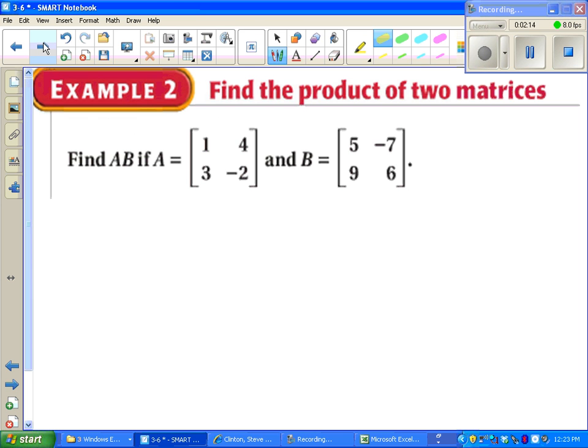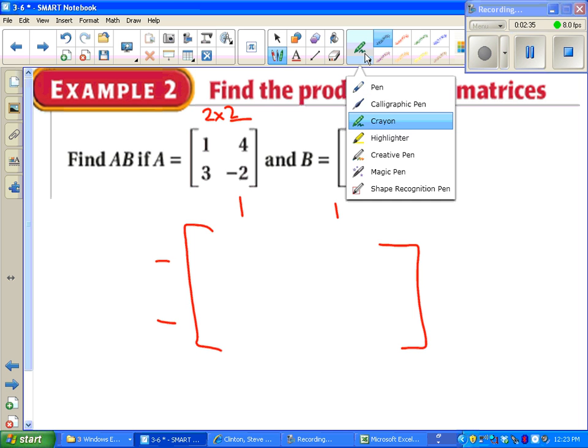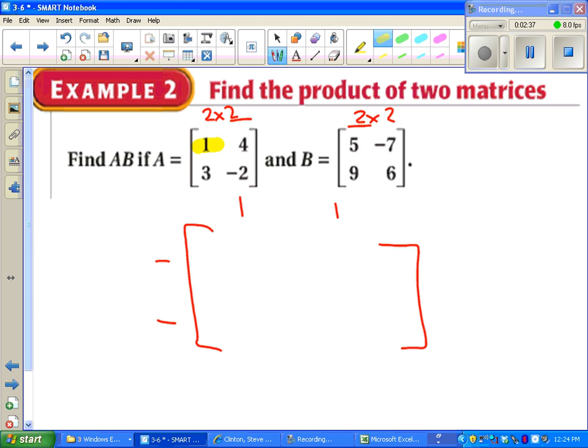So we're going to find A times B. Notice we're allowed to multiply these together because we've got a 2 by 2 and a 2 by 2. So these numbers match up. So our answer is going to be a 2 by 2. We just have to figure out what numbers to put where. And I'll use some color coding and some highlighting to try to keep this as painless as possible. So I'll look at my 1, 4 and my 5, 9. I have to multiply the 1 times 5, which gives me 5, and the 4 times the 9, which is 36. And add those together. That gives me my first box.